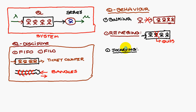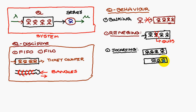Jockeying involves three queues at a railway station with three ticket counters. A person from the first queue jumps to the second queue, and then jumps again from the second queue to the third queue. This type of moving from one queue to another is called jockeying. So queue behavior includes balking, reneging, and jockeying.